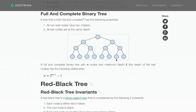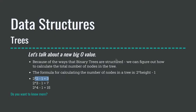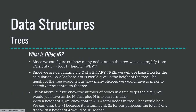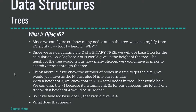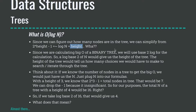So if we know the total number of nodes within a tree, we can figure out some things. Right here it says: what is O of log n? Since we can figure out how many nodes are in the tree, we can simplify it from two to the power of height minus one, down to just log n, where n is the total number of nodes. And that gives us log n equals the height, which is another way of saying how many choices we'll have to make to iterate through this — we can call them steps, height, or choices.